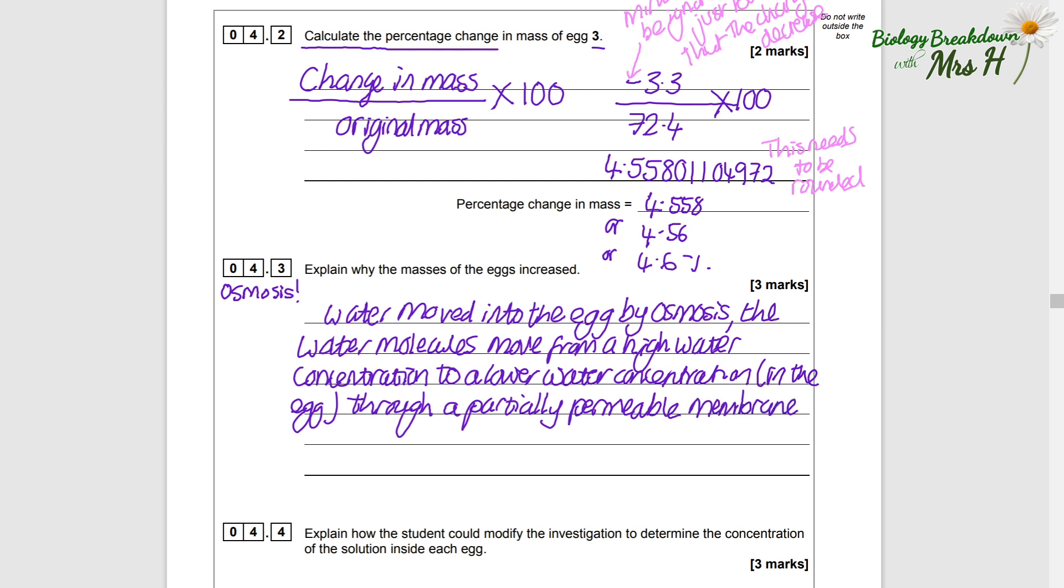So water moved into the egg by osmosis. The water molecules will move from a high water concentration in the beaker to a lower water concentration in the egg through a partially permeable membrane. So remember this stock answer for your osmosis questions. Remember to talk about the water molecules, the movement from the high water concentration to low water concentration, and through a partially permeable membrane, and you should get your three marks.